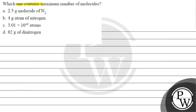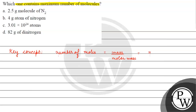Let's read this question. The question says: which one contains the maximum number of molecules? The key concept for this question is the mole concept. The number of moles equals mass divided by molar mass, and it also equals the number of elementary entities divided by Avogadro's number.